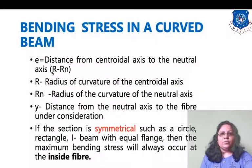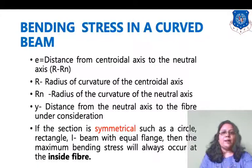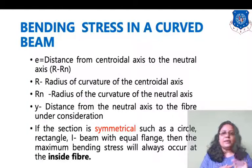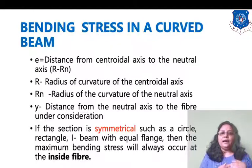The parameter e is the distance from the centroidal axis to the neutral axis. A diagram will help clarify this. Since we are designing the crane hook on the basis of curved beam, in a curved beam both axes do not coincide and have different positions.